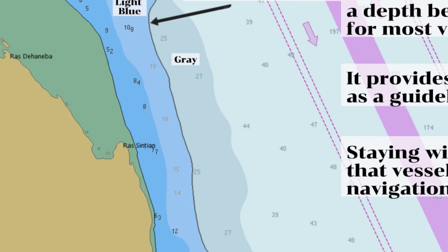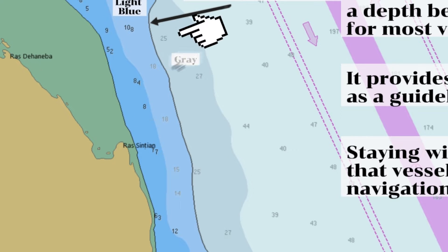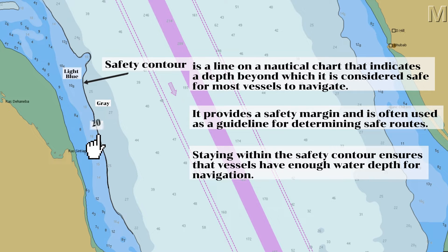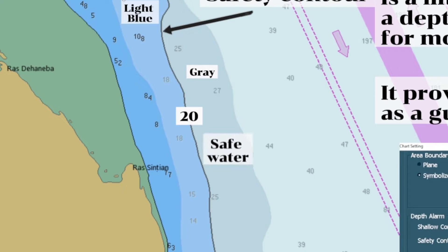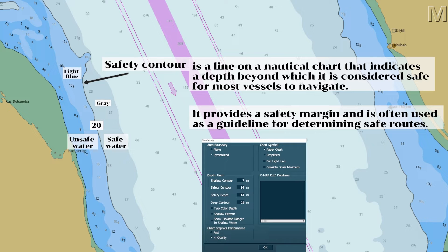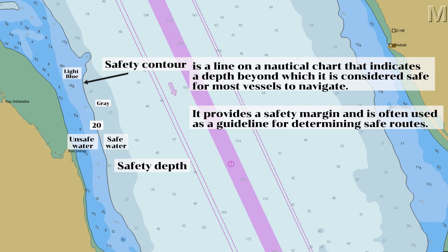If we inspect this ENC, the spot sounding here is 14 meters, then 15 meters, and 18 meters, and on the other side of the safety contour in the gray area, the spot sounding is 25 meters. It means that this safety contour shows an equal depth of 20 meters. The set value for safety contour in this ENC is 14 meters. Since a 15-meter contour is not available, the next available contour higher than 14 meters is 20 meters — that is why the displayed safety contour is 20 meters. This contour is the indication of safe water and unsafe water: the gray area is safe water, while the light blue area is unsafe water, although navigating in the light blue area can still be safe if the safety depth is properly determined.